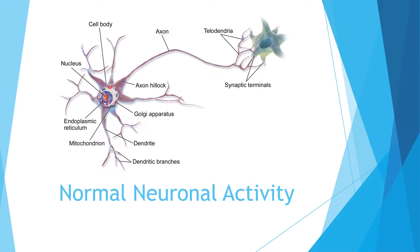Where the dendrite is the input cable into the network router — the neuronal cell body — the axon is the output cable connecting the neuronal cell to other neurons or cells. The axon emerges at the axon hillock and conducts information from the cell body to the nerve terminal. The axon branches into telodendria, a Greek word meaning end of the tree, and each telodendron has an axon terminal that forms a synapse with another neuron's dendrite. Stored within the axon terminal are synaptic vesicles containing neurotransmitters.